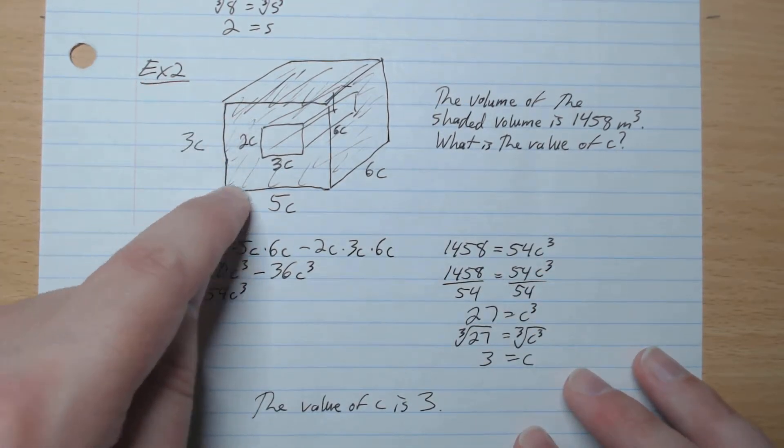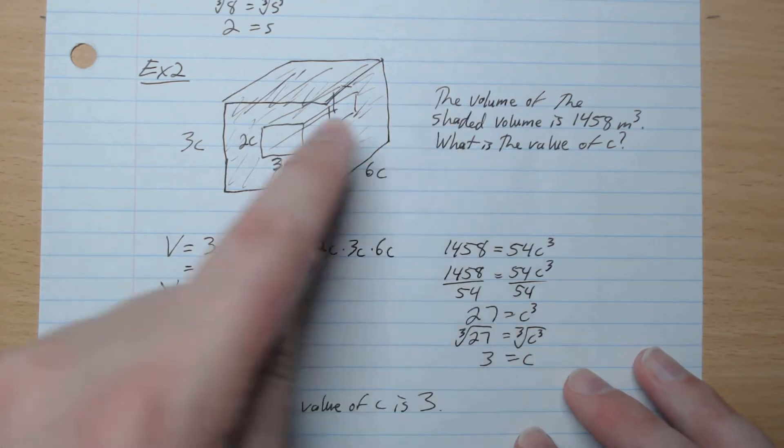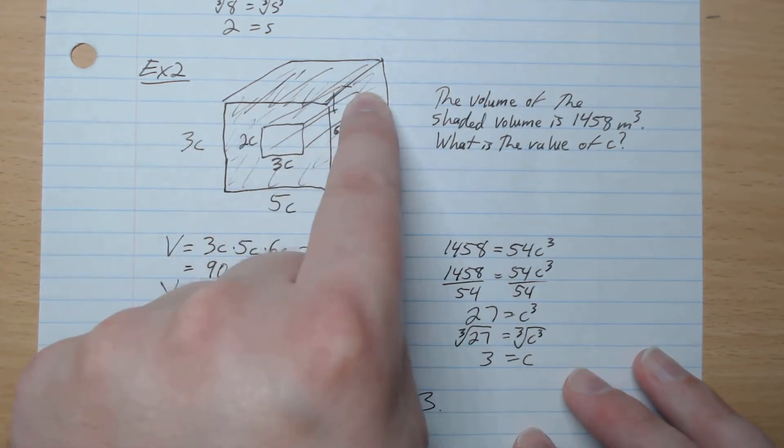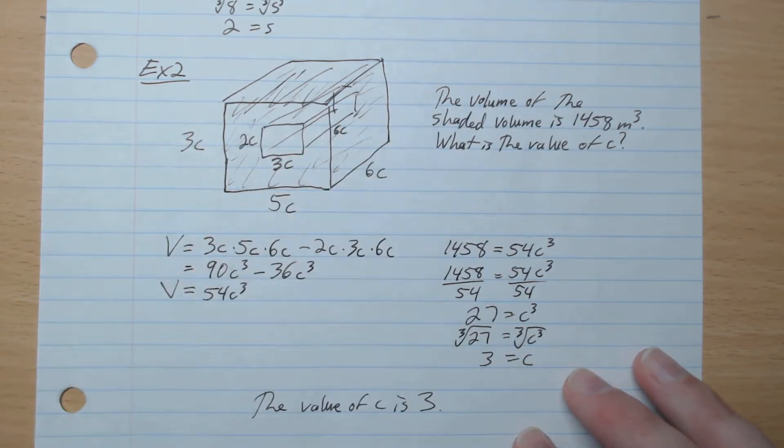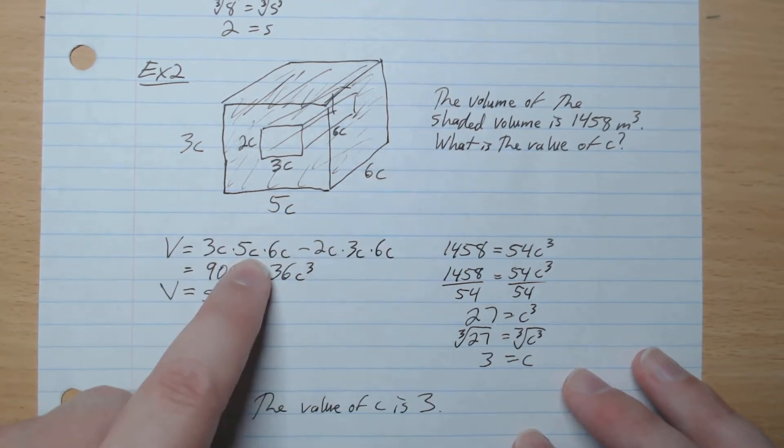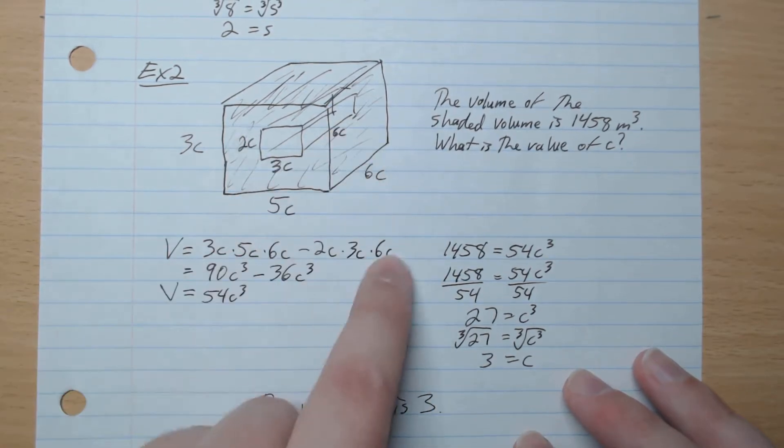So we have 3c, 5c, 6c, 2c, 3c, 6c, like that. So volume is 3, 5, 6, minus 2, 3, 6, like that.